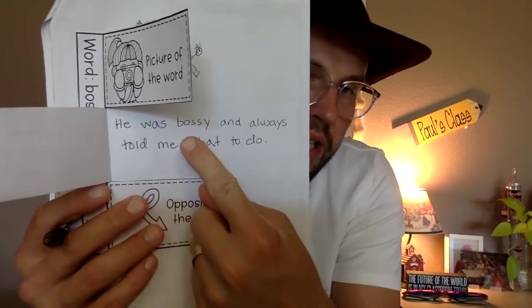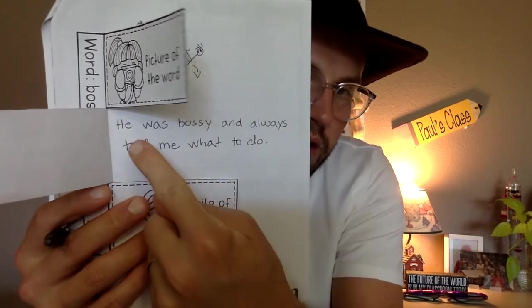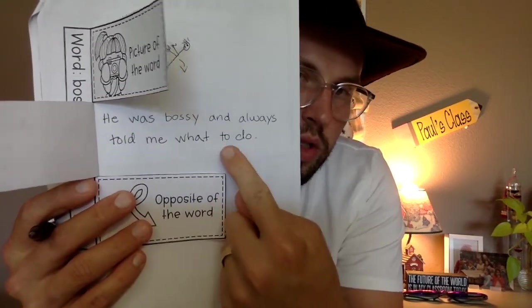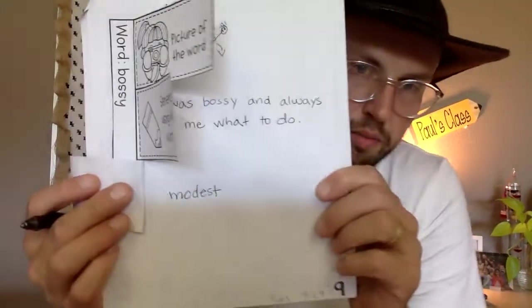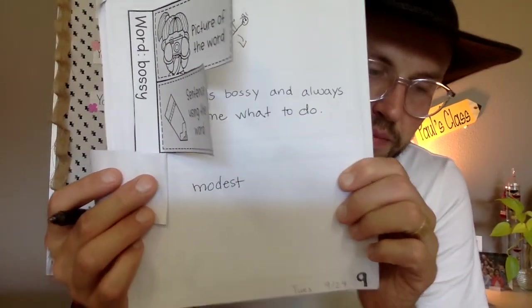Go ahead and pause the video and copy down the sentence: 'He was bossy and always told me what to do.' The opposite of the word is 'modest' — M-O-D-E-S-T. You can pause here and write that down. When you're done, you are done with your reading work for Tuesday!